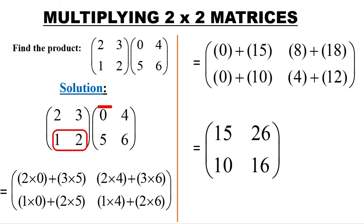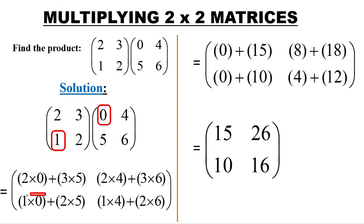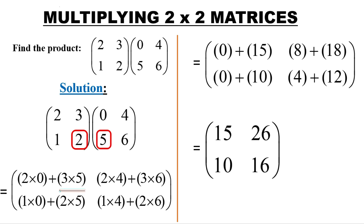Now we go to the second row of the first matrix, multiplied by the first column of the second matrix. So these are how we multiply the elements: 1 multiplied by 0, then we add 2 multiplied by 5. Once we get that sum, it will give us the element in the second row, first column.